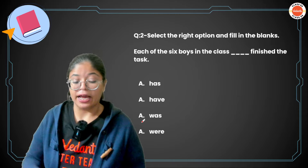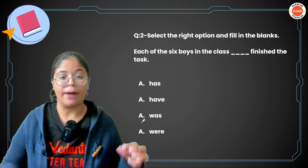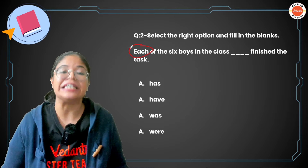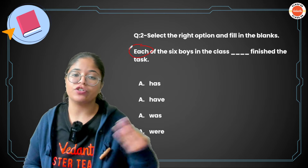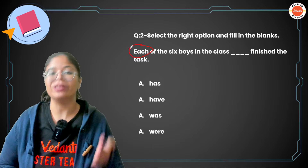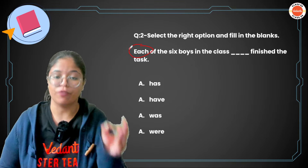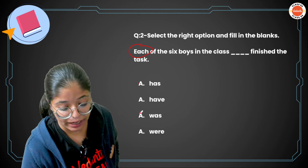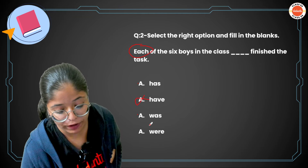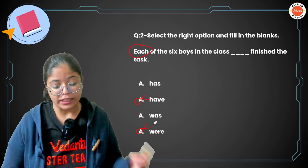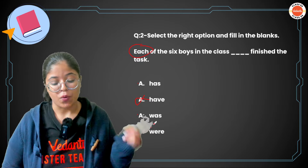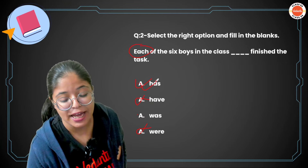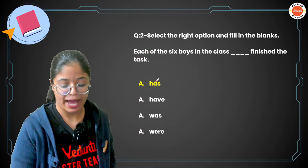Moving on to question number two: 'Each of the six boys in the class dash finish the task.' In this sentence, the subject is 'each.' Each and every are distributed determiners — they always go with singular verbs. So here the singular verb options are 'has' or 'was.' 'Was finished' does not work. The answer is: 'Each of the six boys in the class has finished.' So 'has' is correct here.